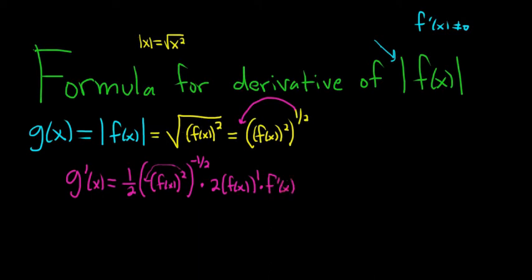So recap: whenever you have a function with an absolute value and you want to find the derivative, you first replace the absolute value with the square root of that function squared, then write the square root to the one-half power, then differentiate using the chain rule. Bring down the one-half, subtract one to get negative one-half, then multiply by the derivative of the inside, which is two — chain rule again — then f of x, then derivative of the inside, f prime of x. The twos cancel.